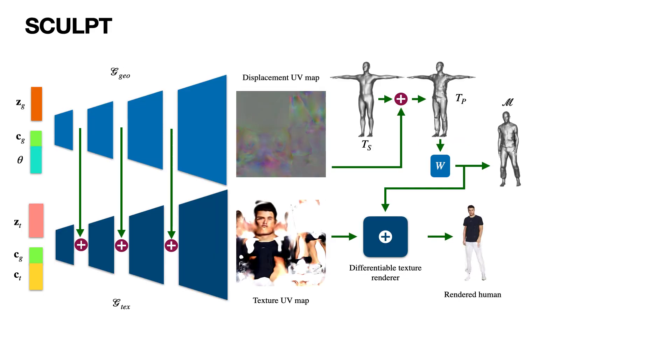During inference, once trained SCULPT provides various controls over clothing color, clothing geometry type, fine textures, and pose. All our models are trained with 256 by 256 resolution images.